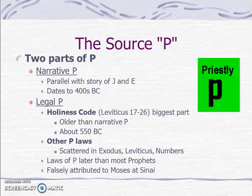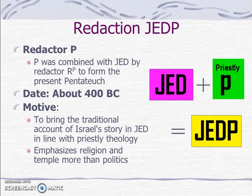The argument of Wellhausen was that the laws of P are later than most of the prophets, and the text falsely attributes these laws to Moses, though in fact he had nothing to do with it. Then comes Redactor P, who combined P with J, E, and D to form the familiar JEDP around 400 B.C. His motive was to bring the traditional account of Israel's story in JED in line with priestly theology, emphasizing religion and temple more than politics.